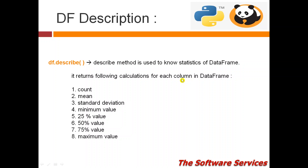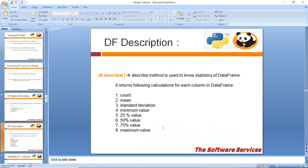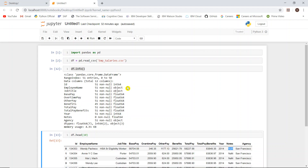All these calculations happen under one condition — the column must have numerical data. It is not relevant for string or object types. If a column contains a string data type, the describe method does not work on that column. For the describe method to work, the column should have numerical values, which may be integers or floats.